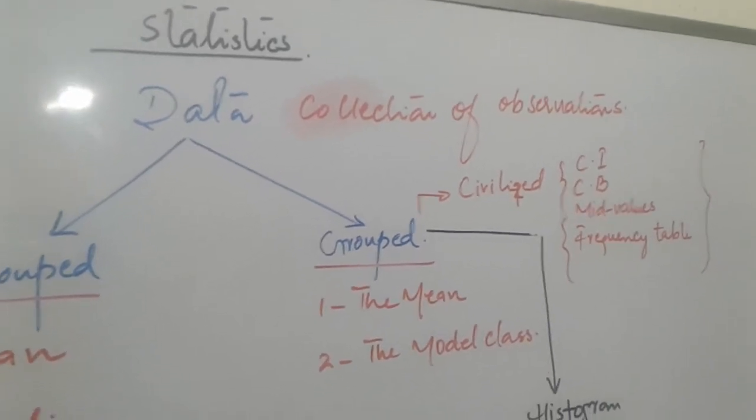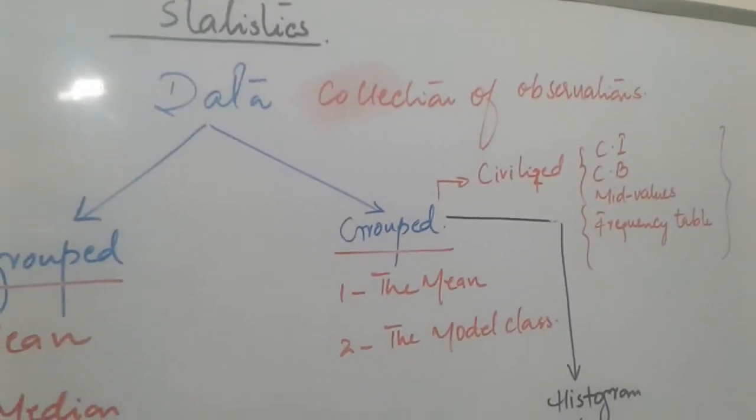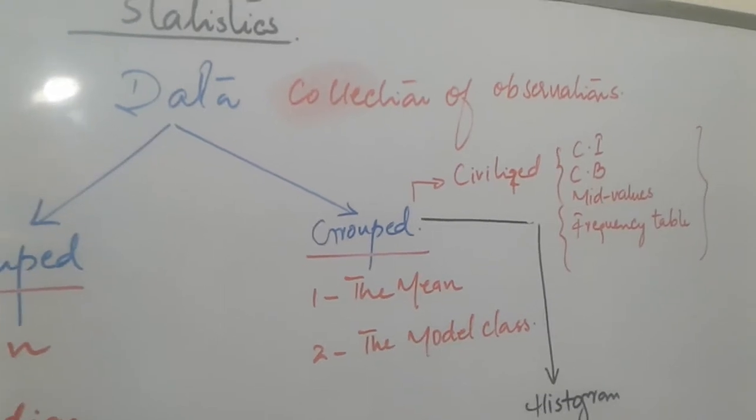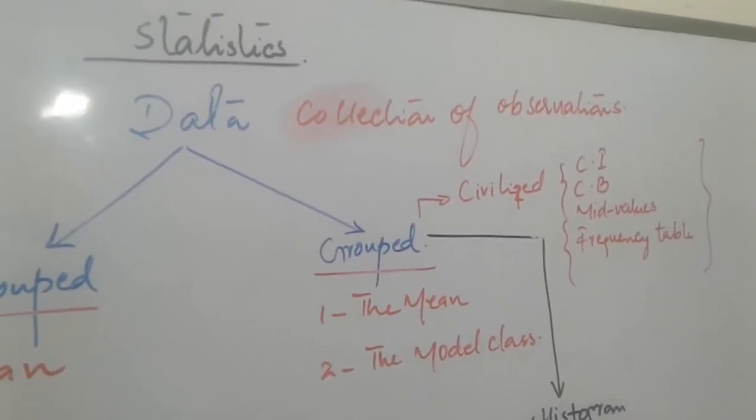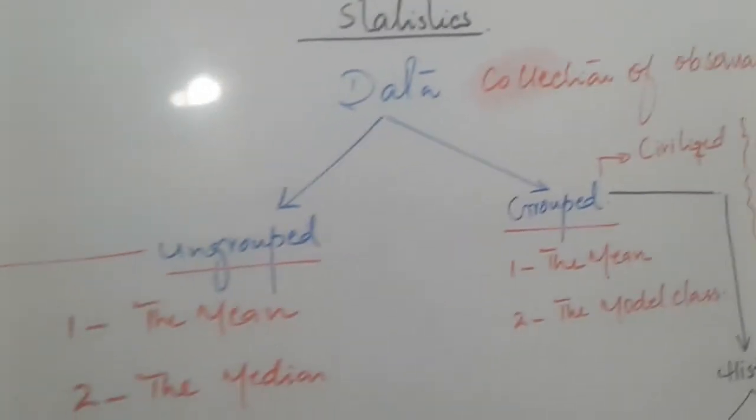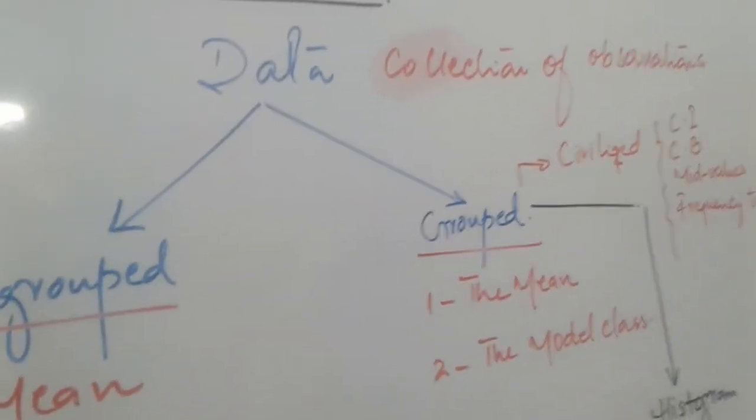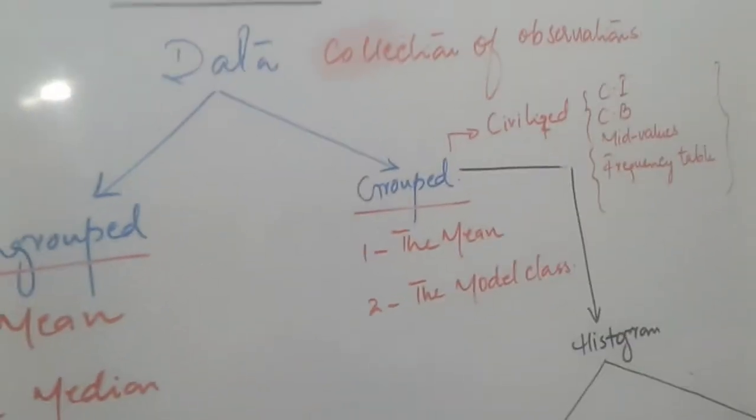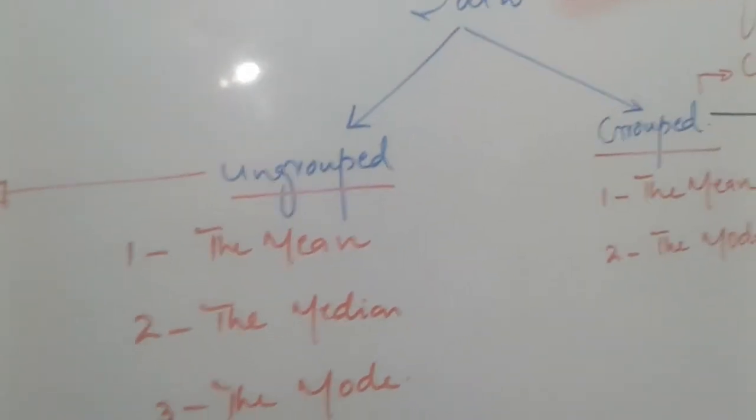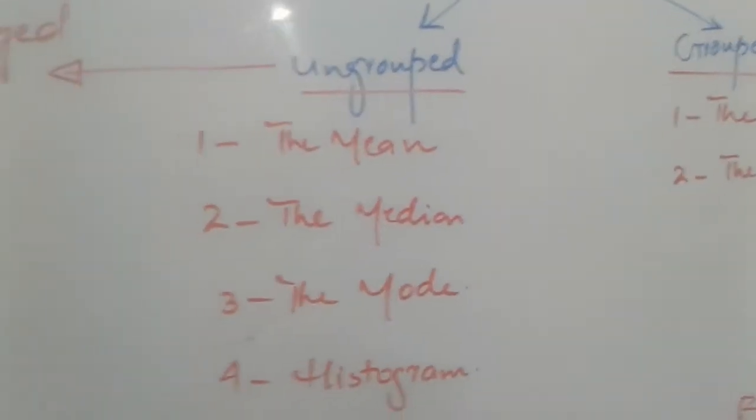Collection of observations. Observation means numbers—math numbers, Pakistan studies numbers, science numbers and something like that. So we can say that observations can be grouped in two parts. Number one is ungrouped data and number two is grouped data.